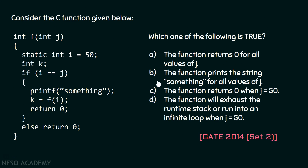You can also eliminate option A because it says the function returns 0 for all values of j. For j equals 50, it will go into an infinite loop, so how can it return 0 for all values? For other values of j it will definitely return 0, but for j equals 50 it will not. Therefore, the statement that the function returns 0 for all values of j is also incorrect.